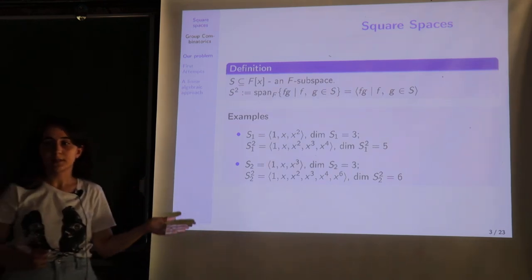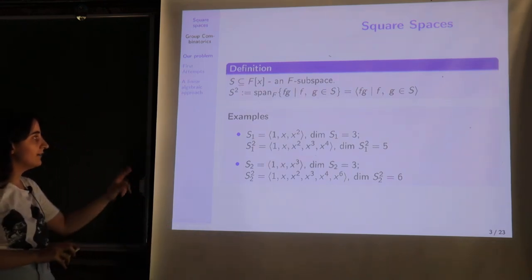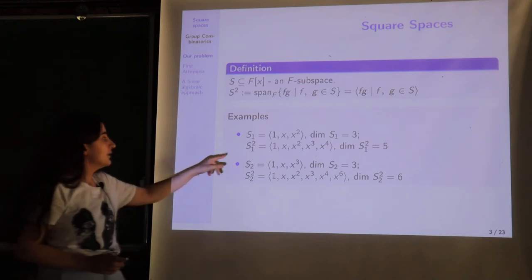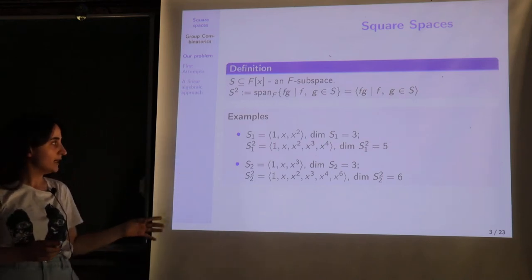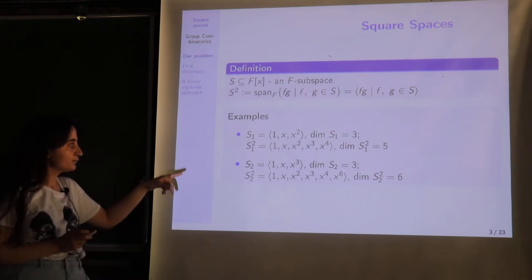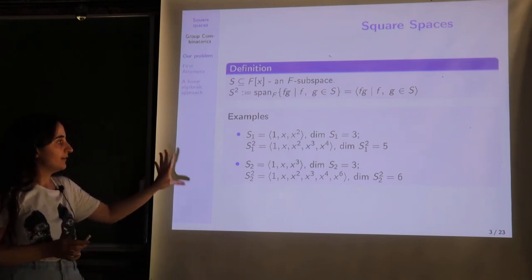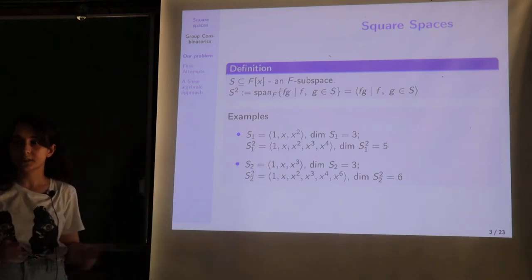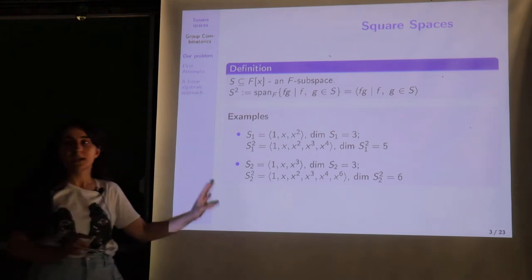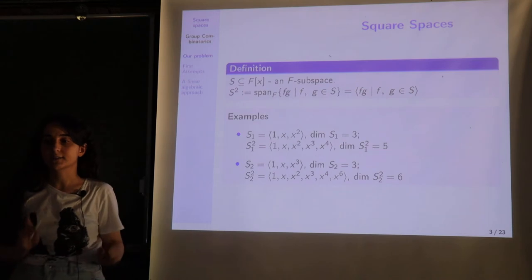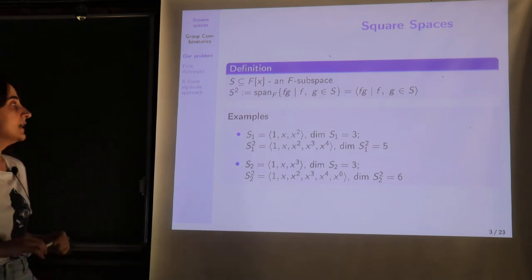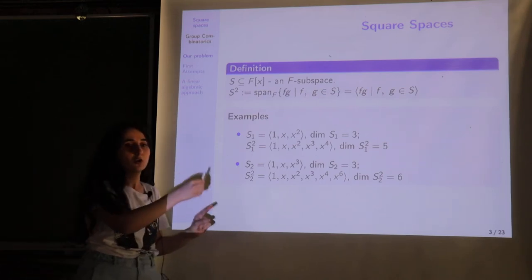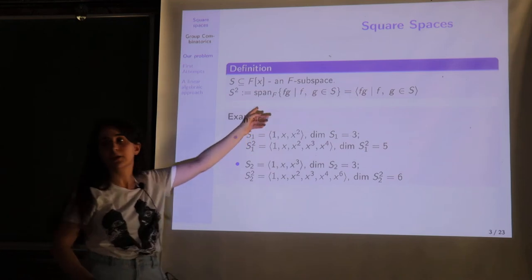Here we see two small examples. First, we have {1, x, x²}, which are in geometric progression and have dimension 3. For this case, S² consists of a span of five elements, so the dimension is 5. The second example does not have a geometric progression; the dimension is again 3, but this time S² is generated by six monomials, so the dimension is 6. Remember, we take not just the products but also all linear combinations of products of elements of S.